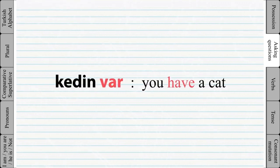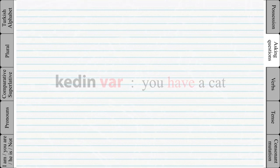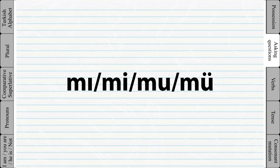Asking questions: we learned how to say 'you have' or 'you don't have' something by adding 'var' or 'yok' after suffixes. Now to make it a question sentence, we add one of four question words — which one to use again depends on the last vowel of the word.